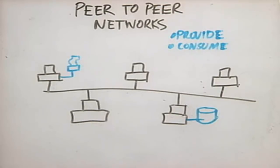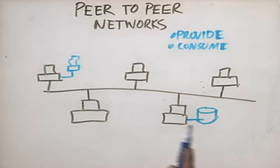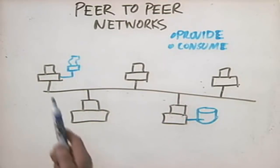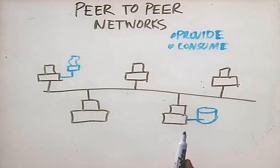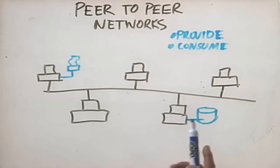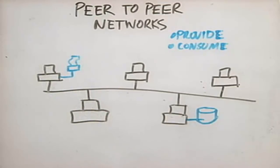In this situation, you have hosts that both provide and consume network services. These two hosts provide a network service — this one provides printing, this one provides storage. Now, at the same time, these hosts also consume services. For instance, this host prints to this workstation, and this workstation saves files to the hard drive in this workstation. In essence, they function both as a client and as a server at the same time.